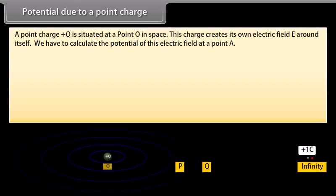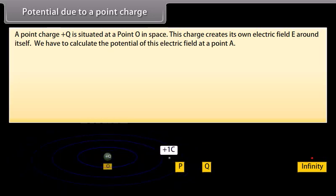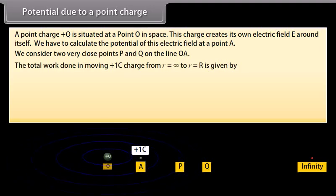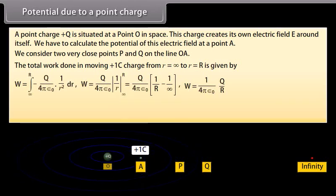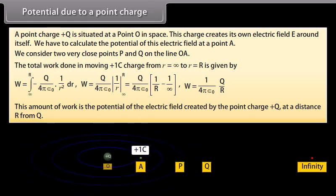Potential due to a point charge. A point charge plus Q is situated at point O in space. This charge creates its own electric field E around itself. We calculate the potential of this electric field at point A by considering two very close points P and Q on the line OA. The total work done in moving a plus one coulomb charge from infinity to point R is given by W equals 1 over 4π ε₀ multiplied by Q over R. This amount of work is the potential of the electric field created by the point charge plus Q at a distance R from Q.